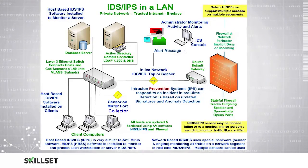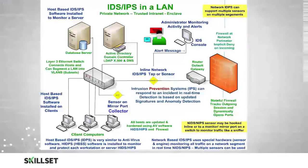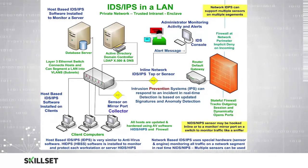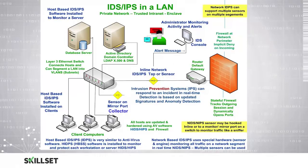Your Intrusion Prevention Systems will respond to an incident in real time, and they use detection technology based on either signatures of known attacks or anomaly detection, which can detect when something is out of the ordinary. Intrusion Detection Systems will typically have a console where administrators can monitor the activities and receive alerts. You'll typically also have a firewall at your network perimeter, which will deny incoming traffic that is not specifically allowed by your policy.